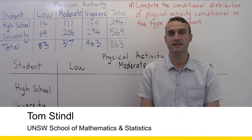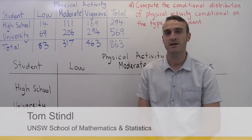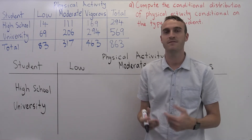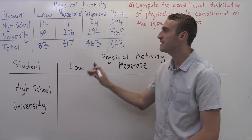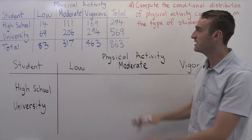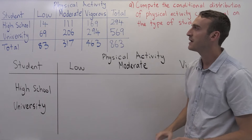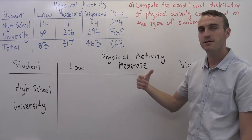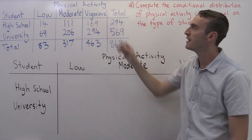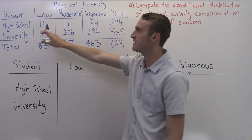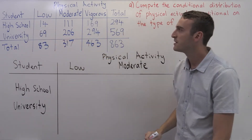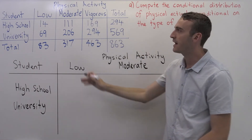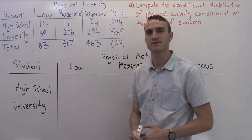In this question we're going to look at the relationship between physical activity and whether a student goes to high school or university. Generally, as students move from high school to university, their physical activity levels decline. We have the observed counts here: we sampled 863 students and looked at three levels of physical activity. We treat it as a categorical variable with categories low, moderate, and vigorous, and then the two student categories are high school and university. For example, the value 14 means that out of our sample of 863, we had 14 high school students with low levels of physical activity.